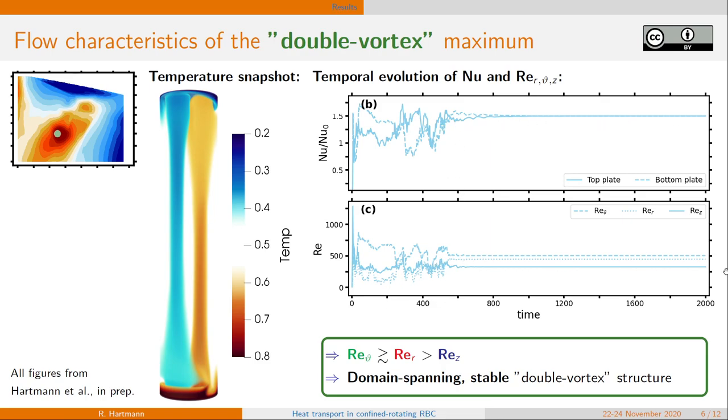And the flow characteristics is very different as well. Rotation is already strong enough to be the predominant motion. Both horizontal components, azimuthal and radial, are larger than vertical motion.